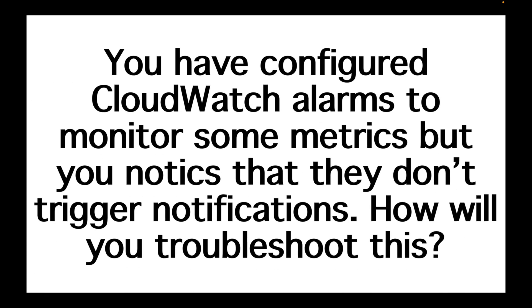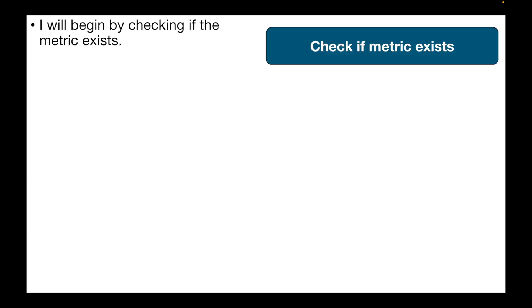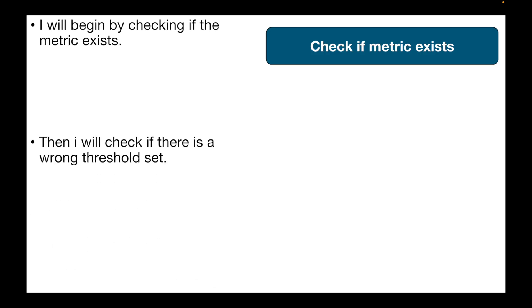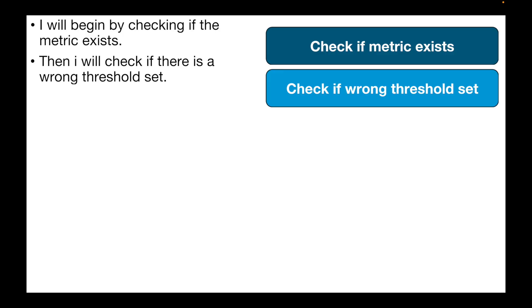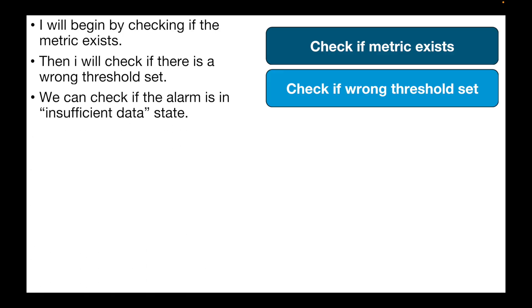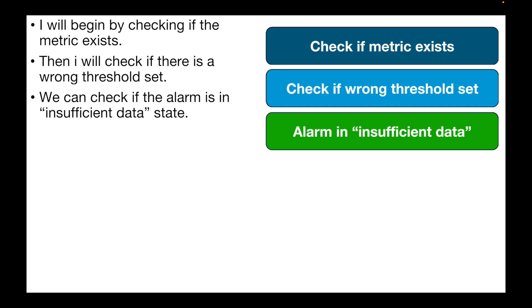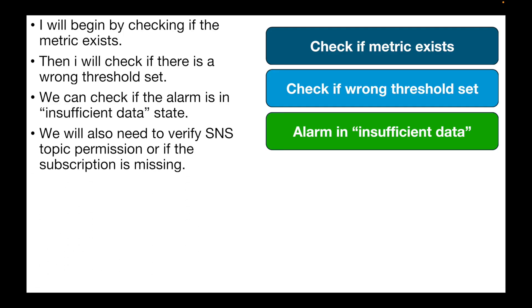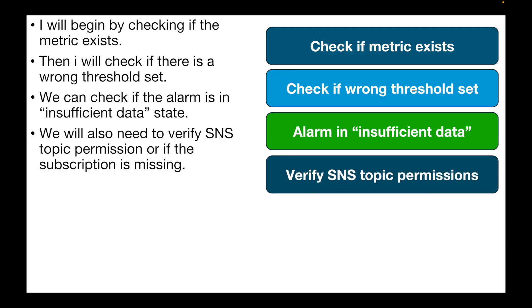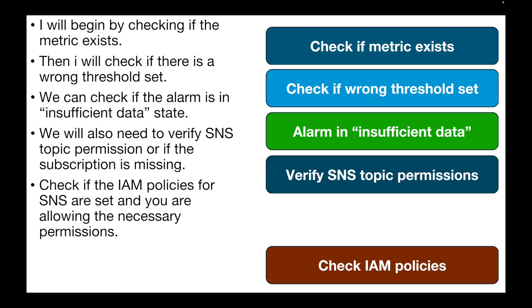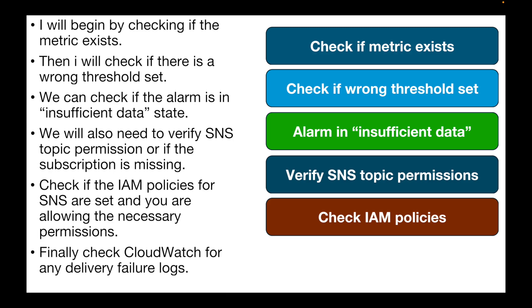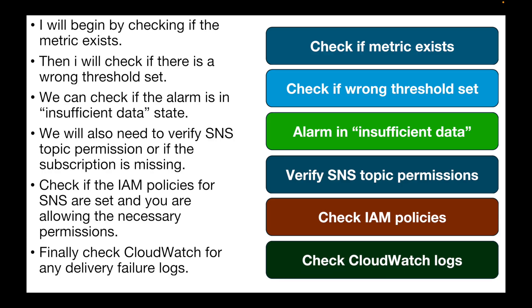The next question is: you configured CloudWatch alarms to monitor metrics but they don't trigger notifications. How will you troubleshoot this? Begin by checking whether the metric itself exists. Then check if a wrong threshold is set — this may also result in the alarm showing an insufficient data state. Verify whether the SNS topic has the correct permissions and that the subscription is not missing. Check that IAM policies for SNS allow the necessary permissions. Finally, check CloudWatch for delivery failure logs to understand why notifications are not being sent.